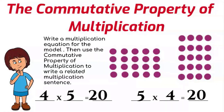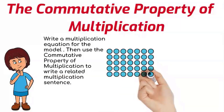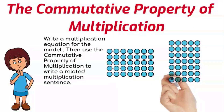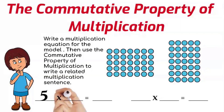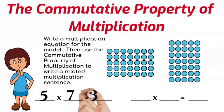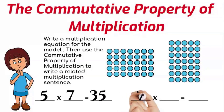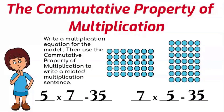Let's try another one. Check out this array — count the rows in the first orientation: five. And how many in each row? Seven. So five times seven is thirty-five. Now flip the factors: seven times five, and the product remains the same — thirty-five. You're understanding the commutative property of multiplication very well.